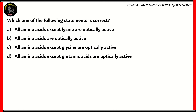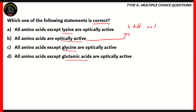The final question for today: which of the following statements is correct? All amino acids except lysine are optically active; all amino acids are optically active; all amino acids except glycine are optically active; all amino acids except glutamic acid are optically active. To solve this, we need to find out what optically active means. In terms of amino acids, optically active means that four different molecules are attached to the central carbon atom.